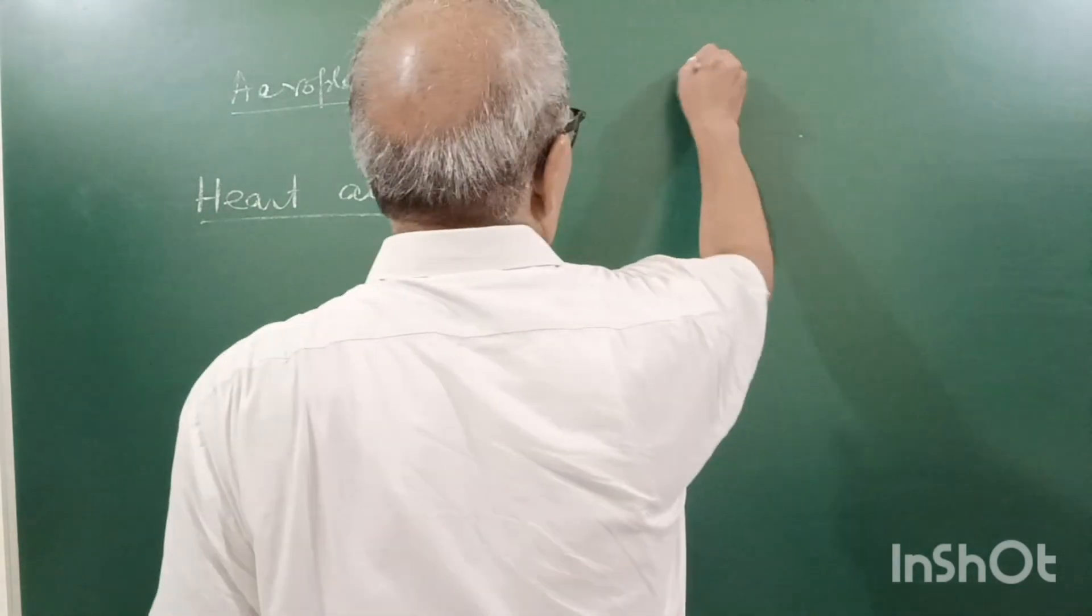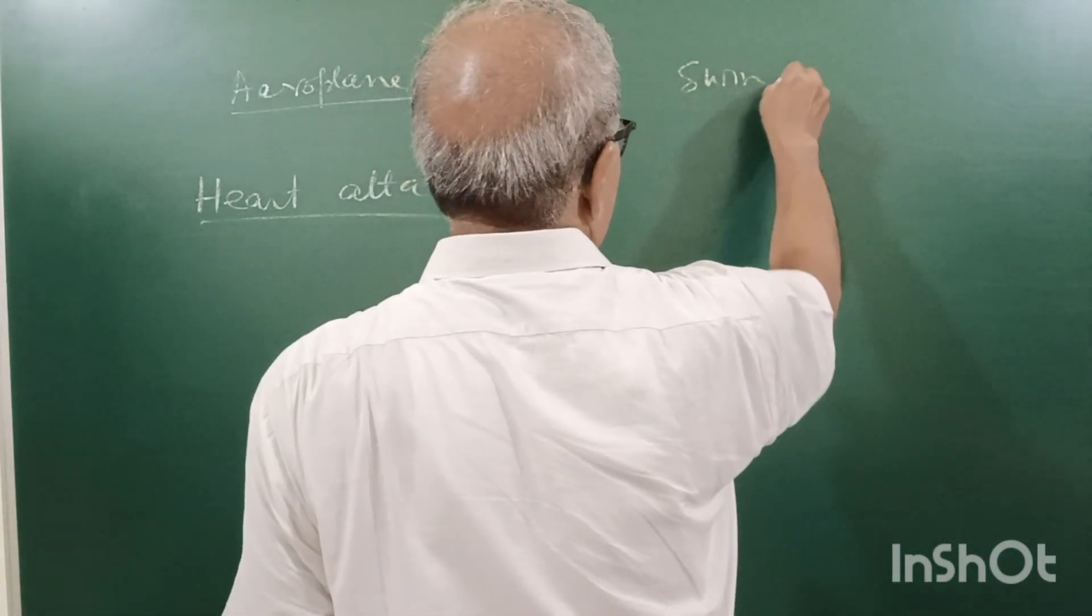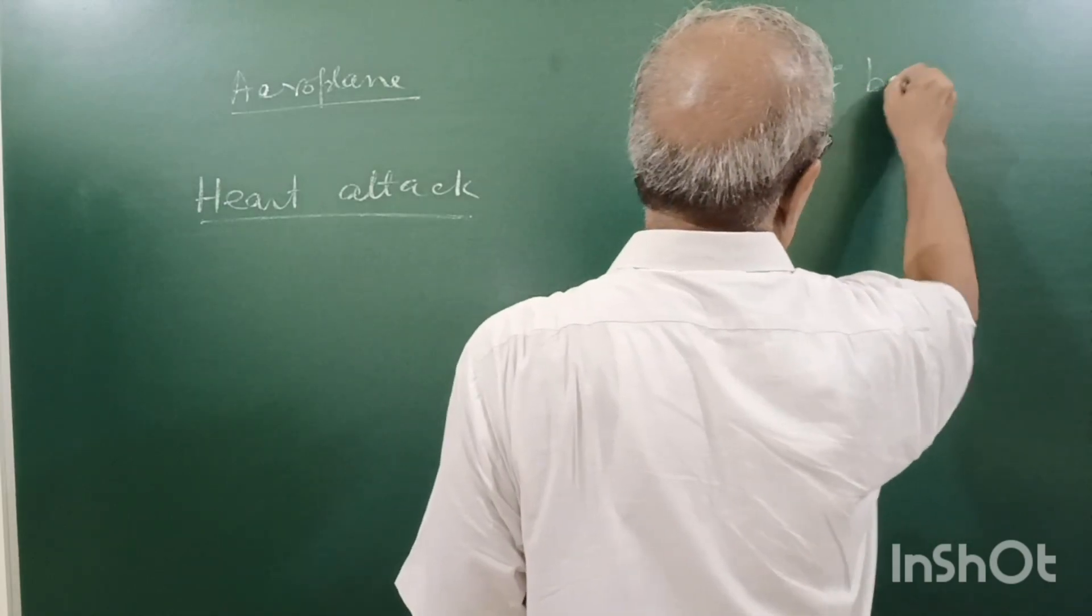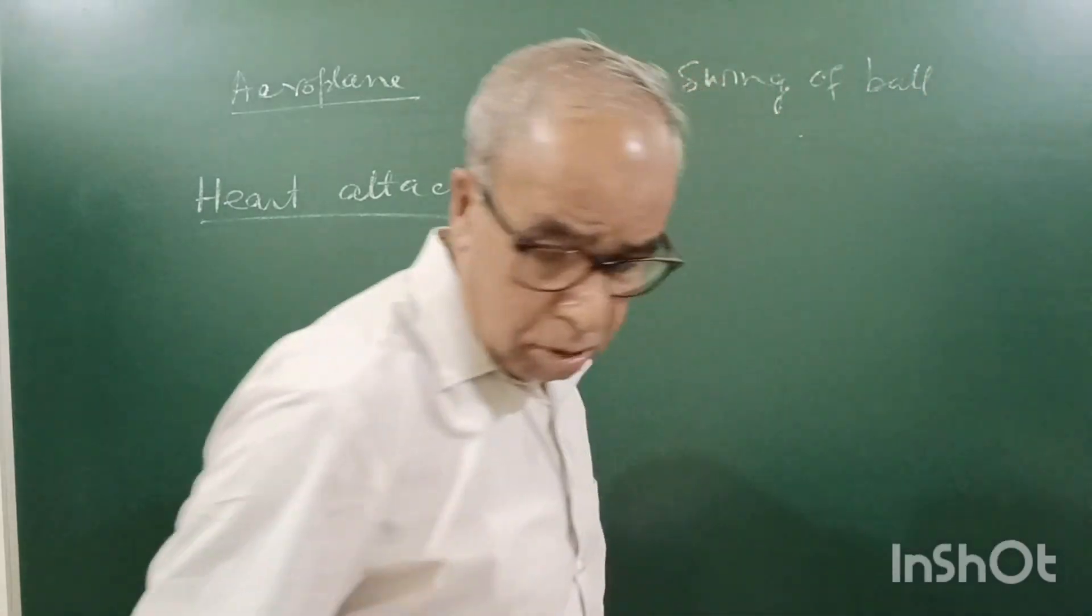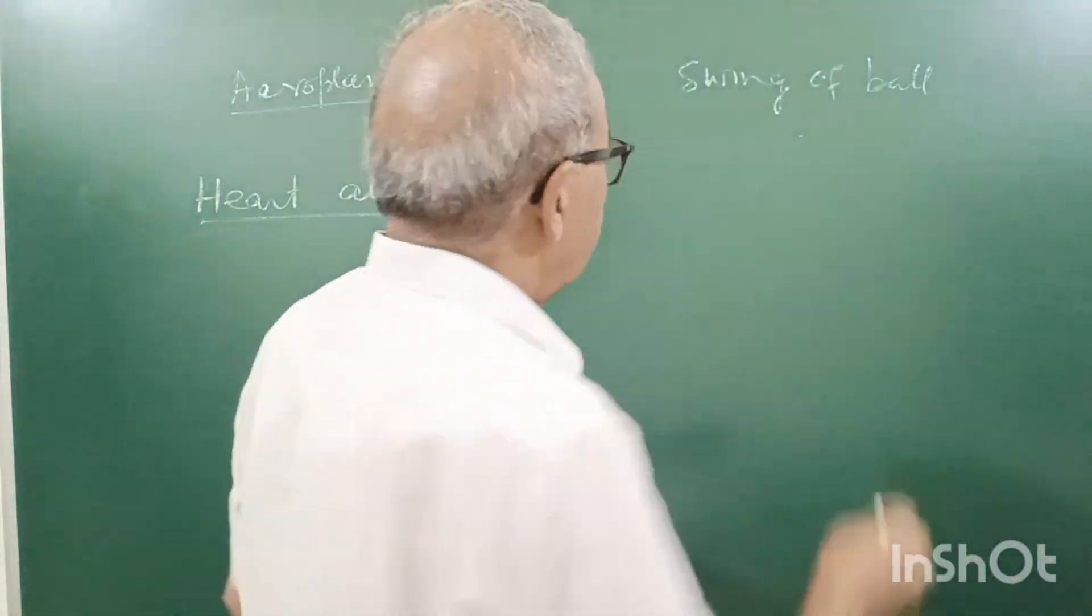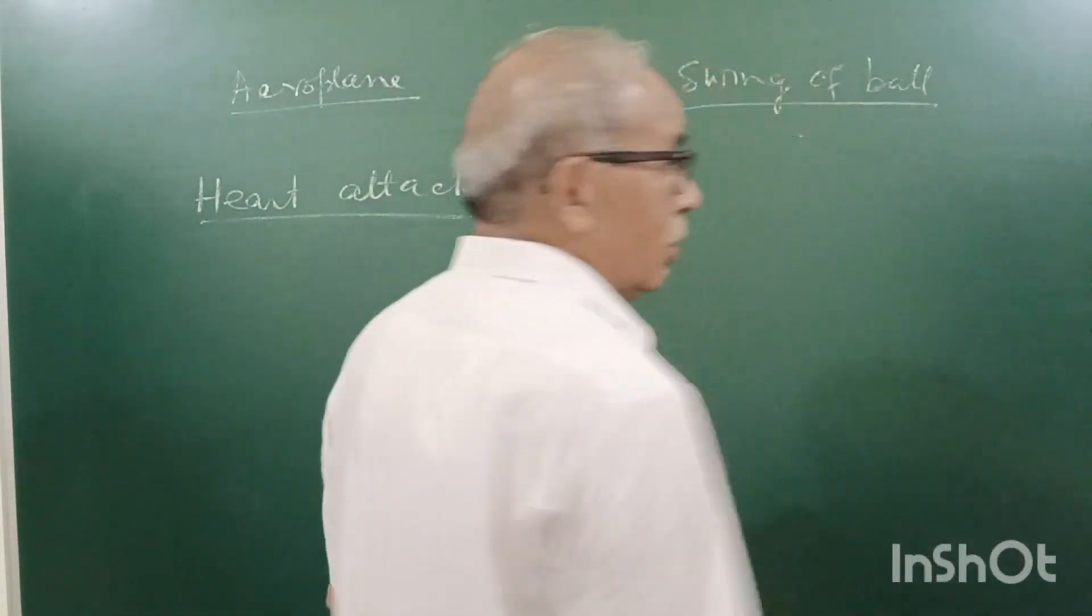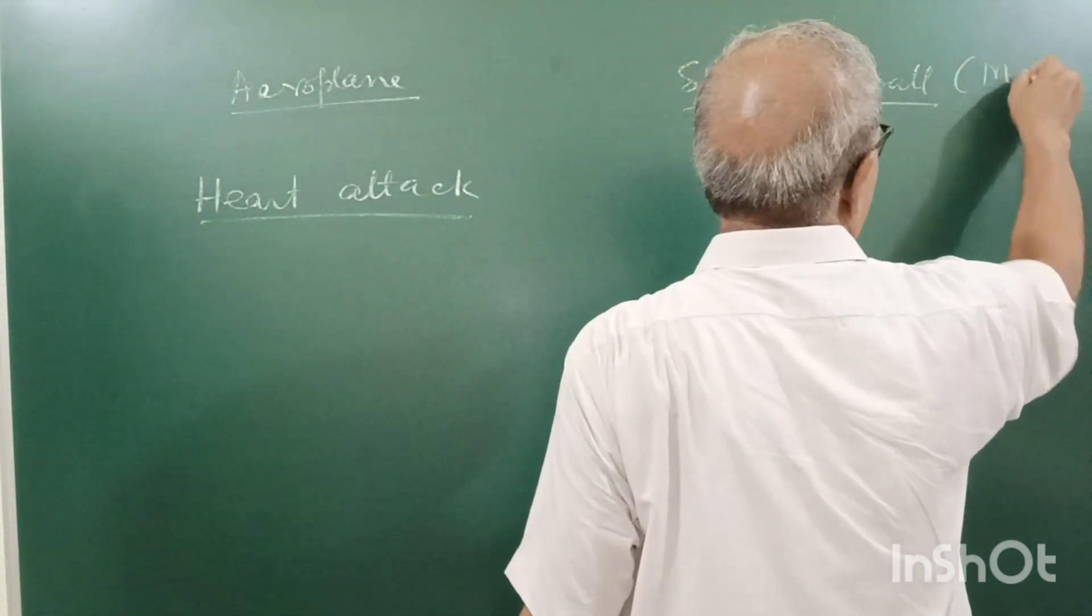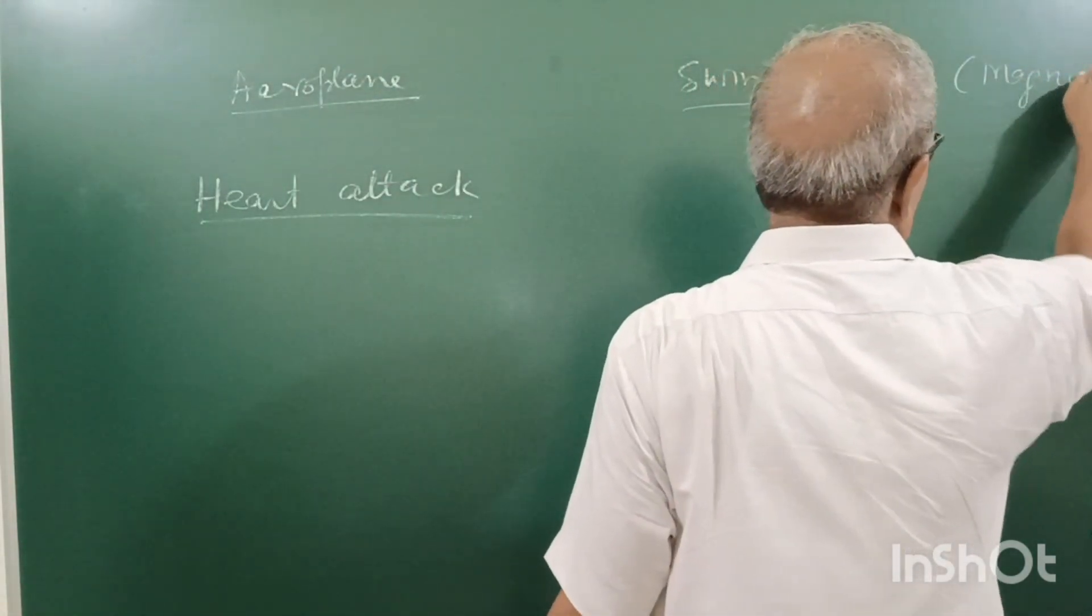Now, swing of ball in air. Swing of ball. Cricket ball, volleyball. In cricket, out-swing and in-swing. How do you do that? This is also Magnus effect. Magnus effect.